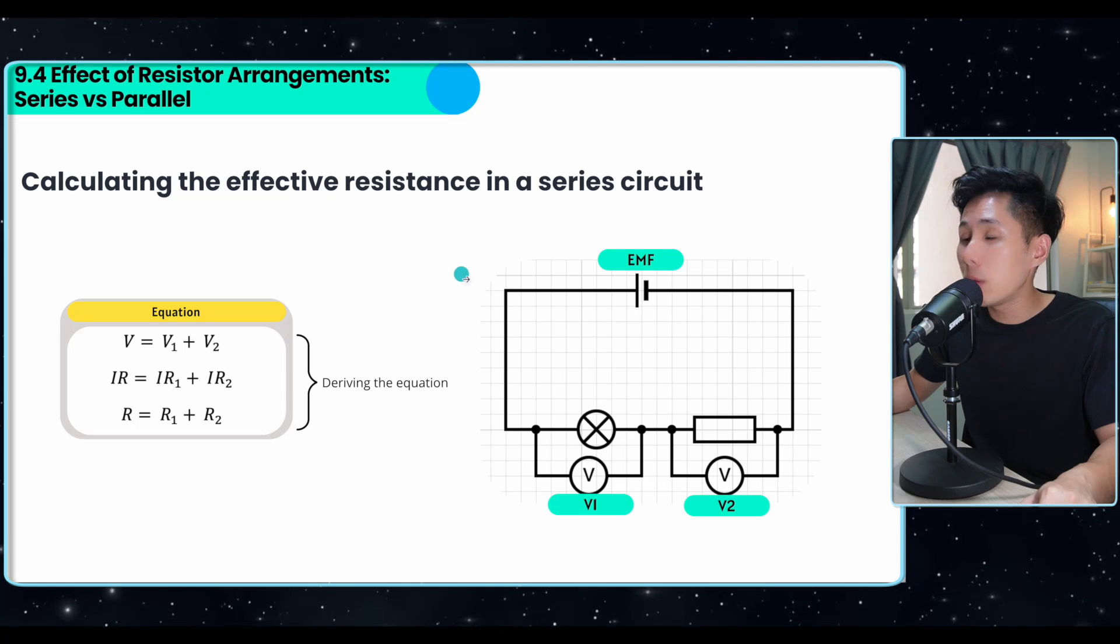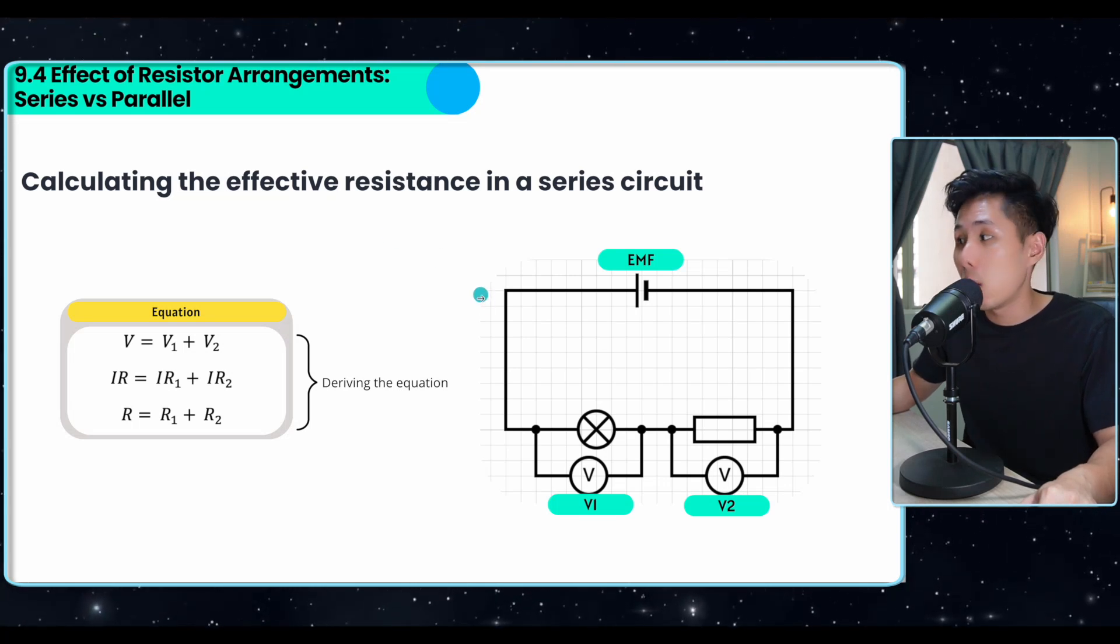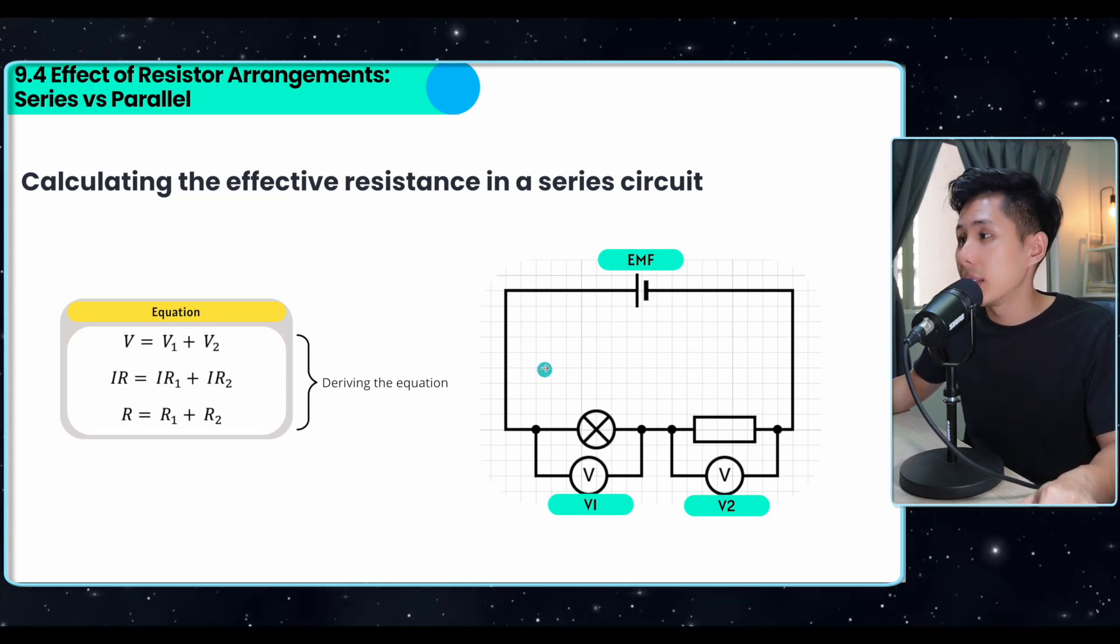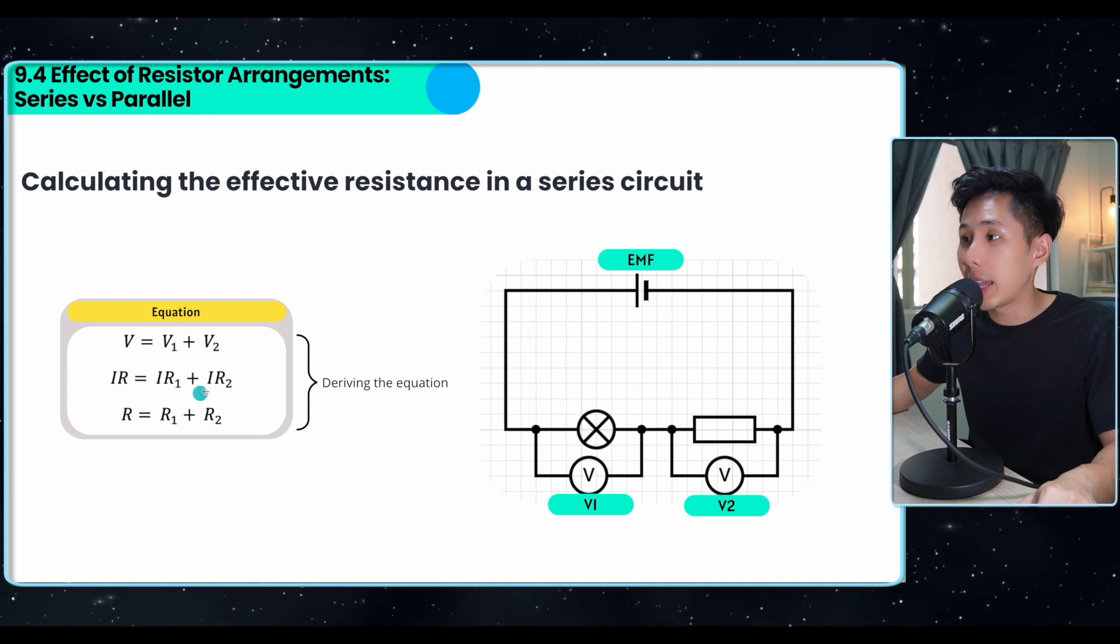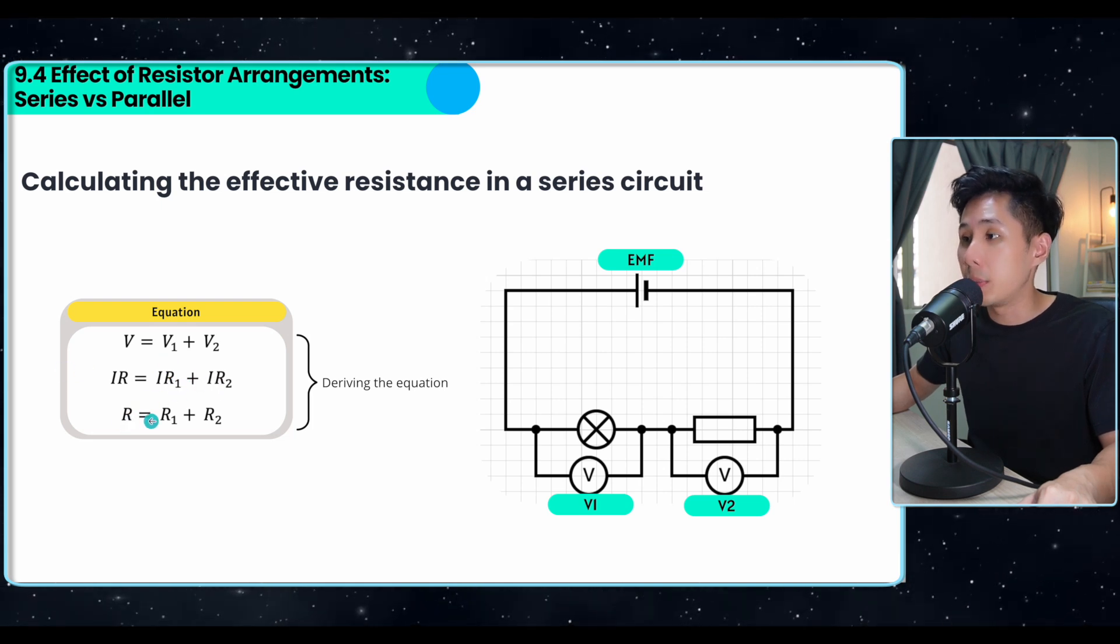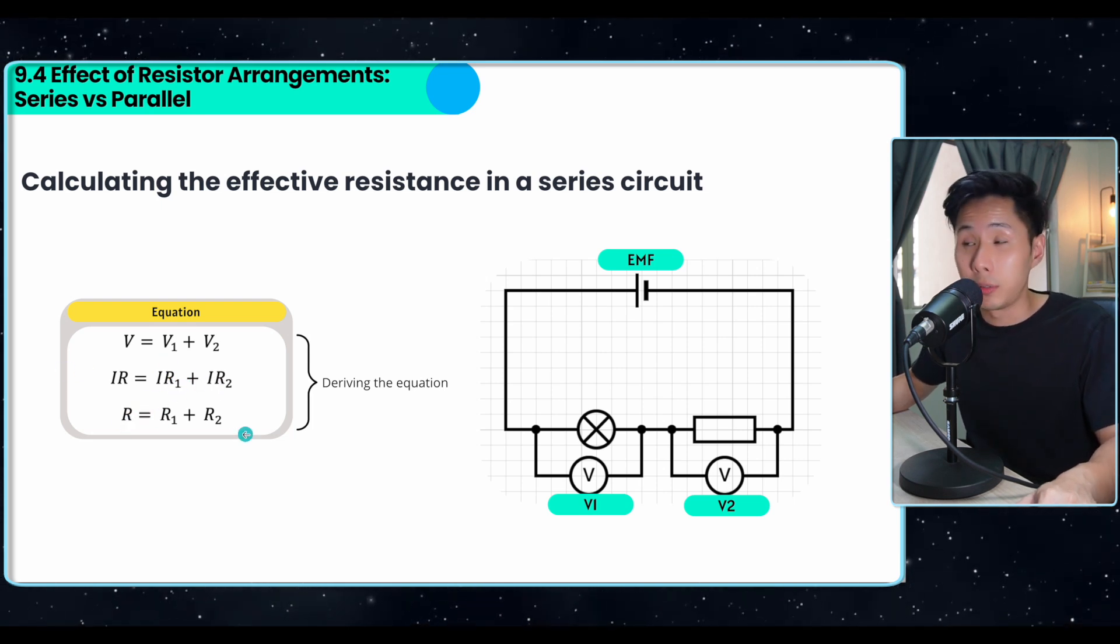Now, let's move on to the next. How we calculate the effective resistance when you have more than one components. So in a series circuit, it's pretty straightforward. We know that the current is the same, the only difference is the resistance. So we just cancel out the current, then the total resistance will be equal to R1 plus R2, etc.